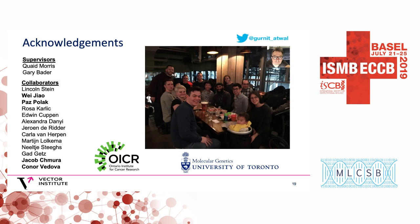Thank you for your talk — time for questions. The first question: when looking at chromatin accessibility and windowing the genome, you counted up the number of mutations but removed the type of mutations — if I've understood correctly. Can you explain why you got rid of that information?